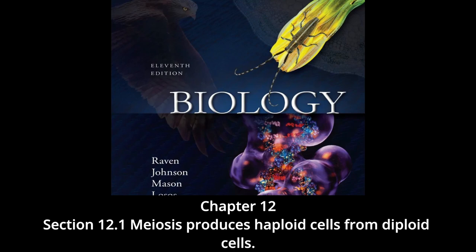The zygote may undergo mitosis or divide immediately by meiosis to give rise to haploid individuals. In plants, the haploid cells that meiosis produces divide by mitosis, forming a multicellular haploid phase. Certain cells of this haploid phase eventually differentiate into eggs or sperm. In animals, the cells that will eventually undergo meiosis to produce gametes are set aside from somatic cells early in development — these are often referred to as germline cells.